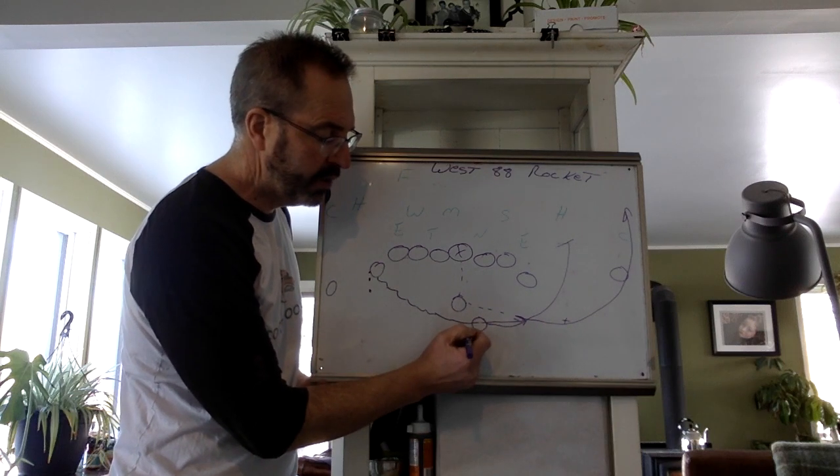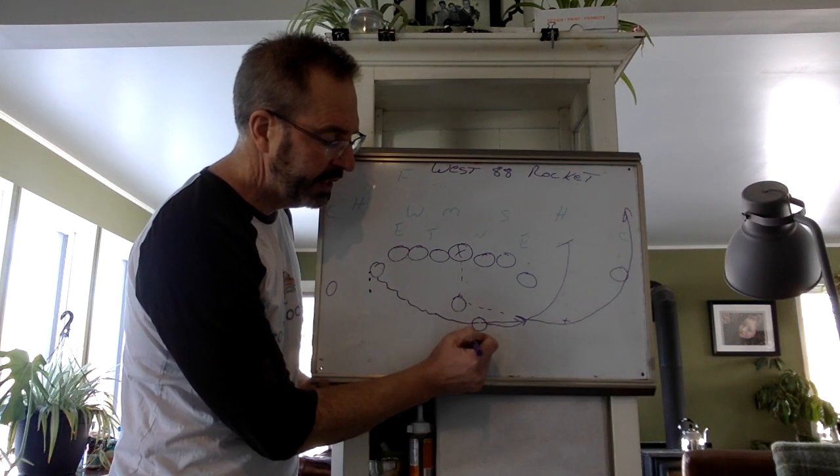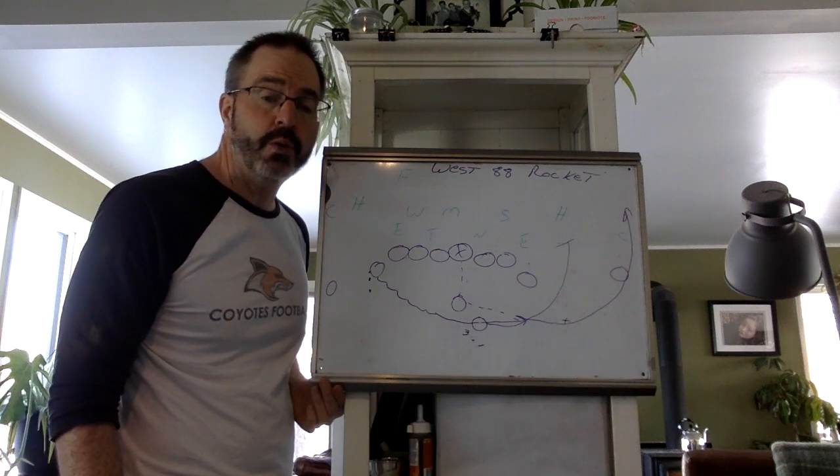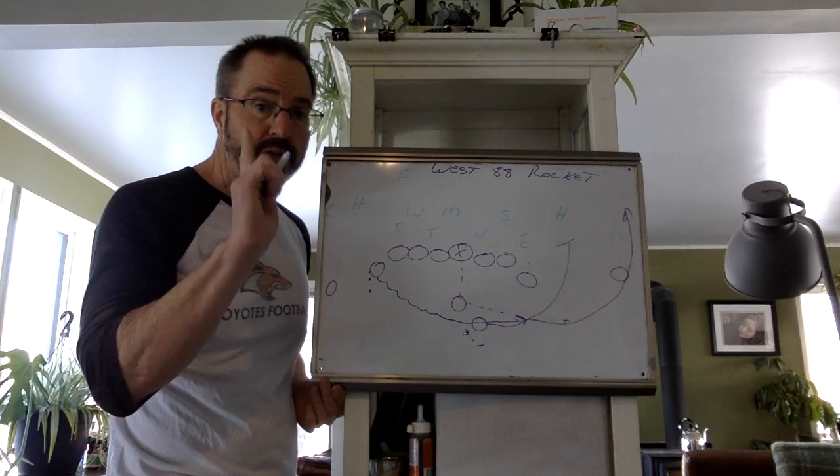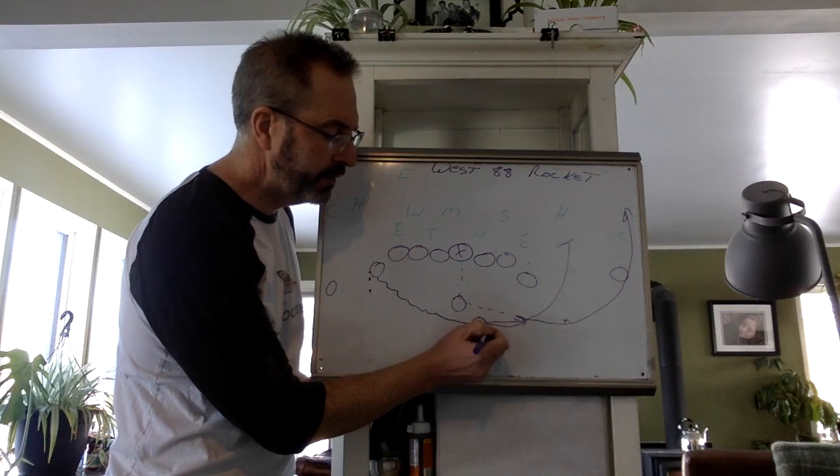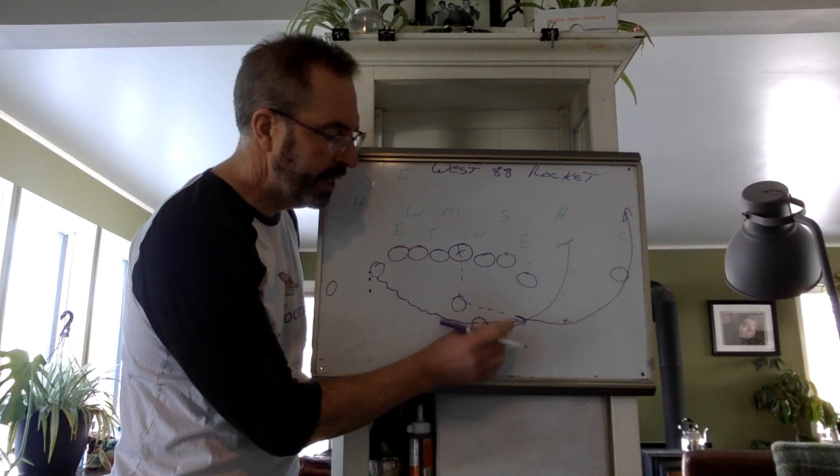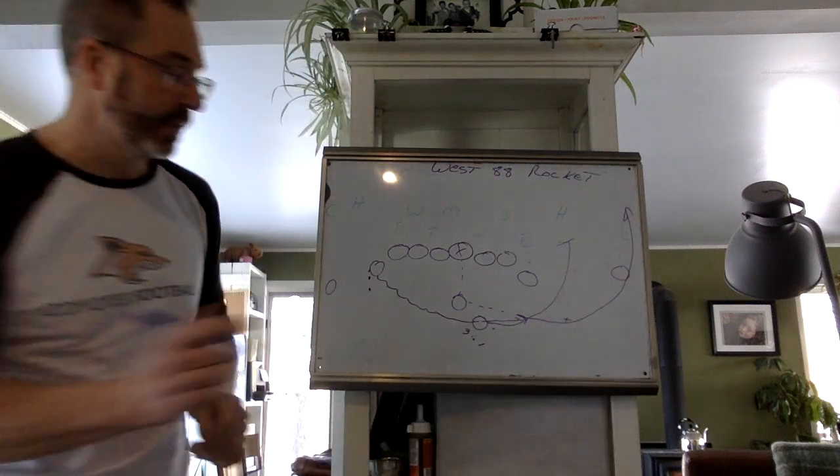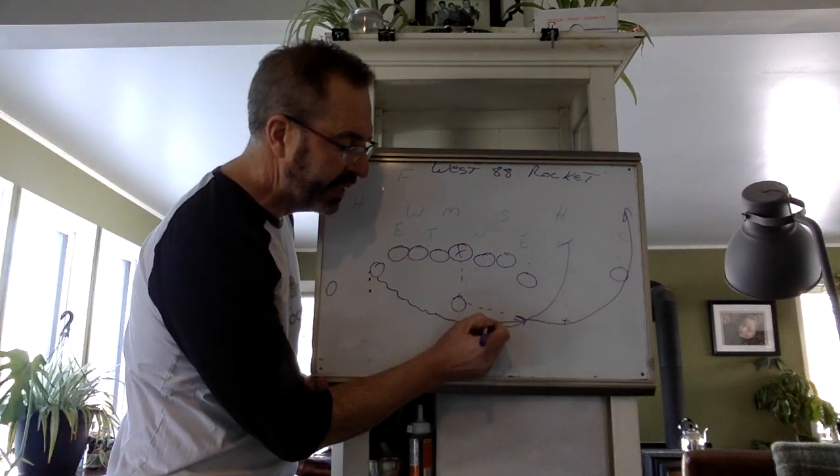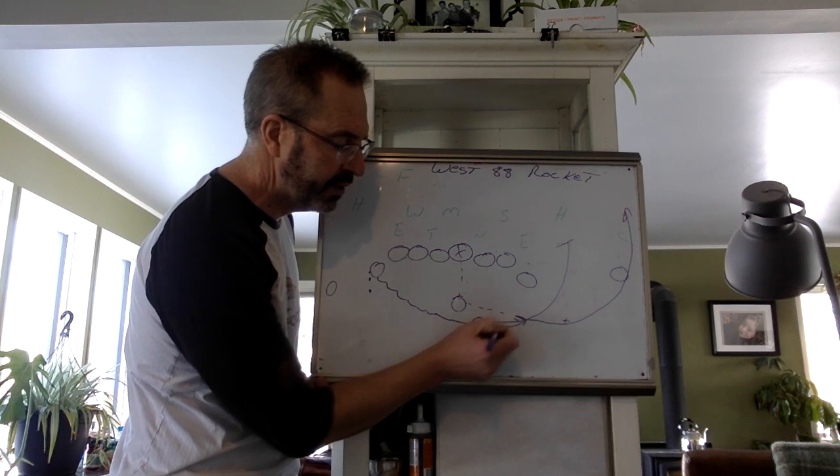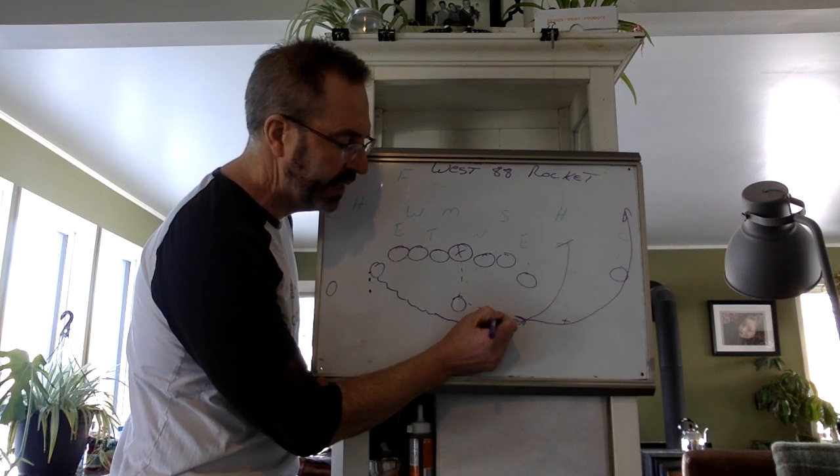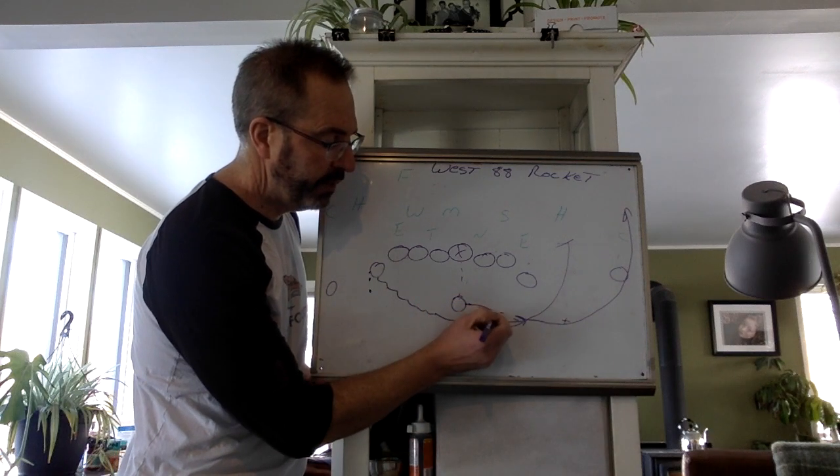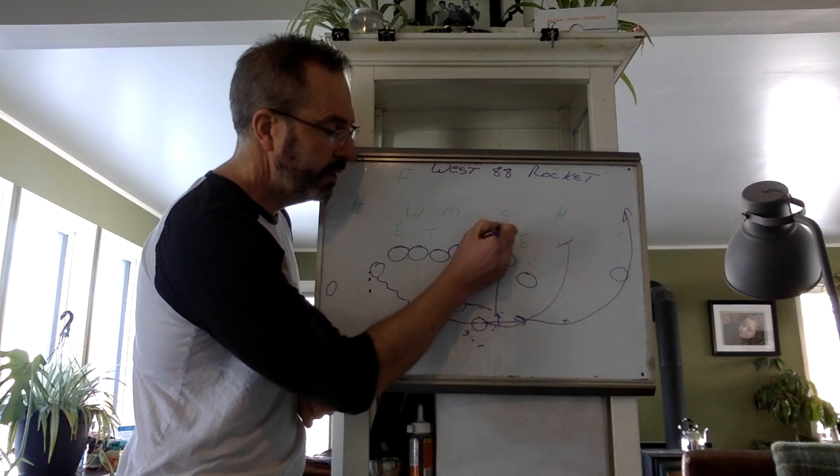You're going to take what we call a three in one, and that means we want you to take three steps within a one yard box. First step is with your outside foot as if you're going to the sideline, so you're going to turn your shoulders. Second step is a gather with your shoulders still turned, and then your third step is straight ahead here. The quarterback would take the ball and reach out to veer to you in here.